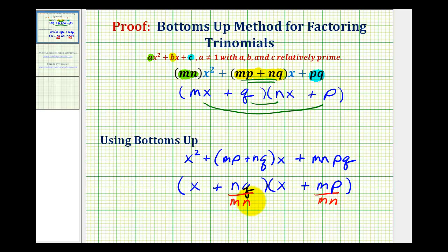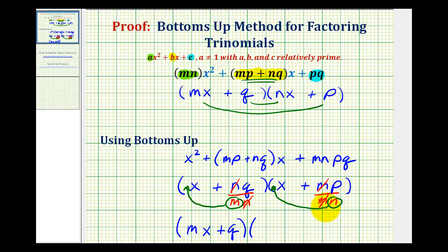The next step in the bottoms-up method is to simplify these fractions. Notice here we have a common factor of n, and here we have a common factor of m. And here's the reason why this is called the bottoms-up method: we move the simplified denominators up to the position of the coefficient of x. We move m up here to get mx plus q, and move n up to get nx plus p. So we rewrite this as the quantity mx plus q times the quantity nx plus p.